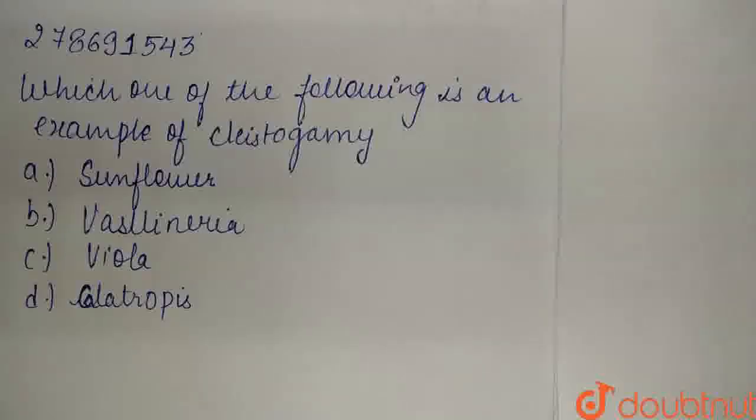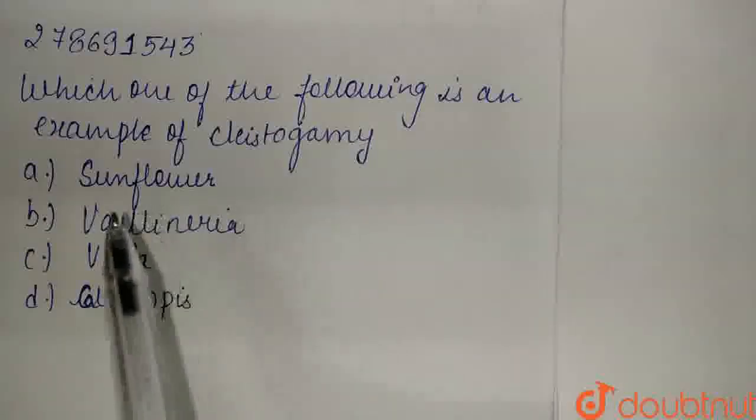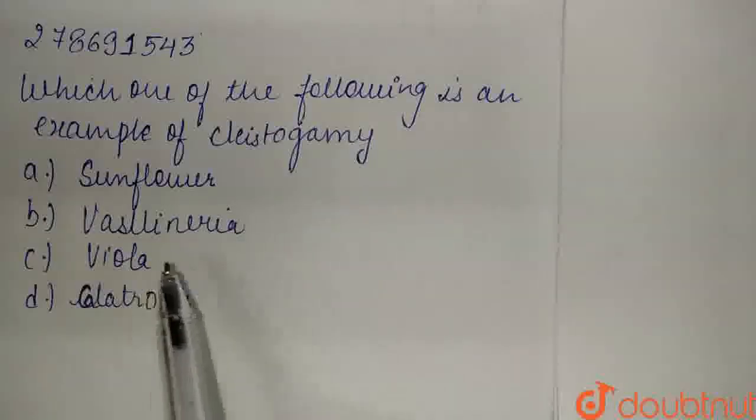Hello friends, welcome. So the question is, which one of the following is an example of cleistogamy? A sunflower, B Vallisneria, C viola, D Calotropis.